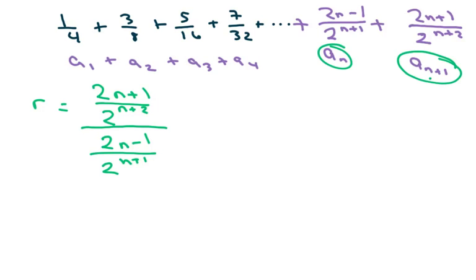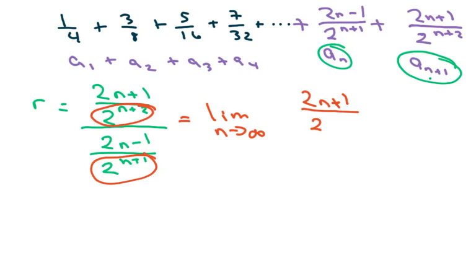So r equals 2n plus 1 over 2 to the n plus 2, over 2n minus 1, over 2 to the little n plus 1. And I'm going to go ahead and take care of these. I'm going to take care of these and rewrite it. And I didn't even do the limit, so let me do the limit.